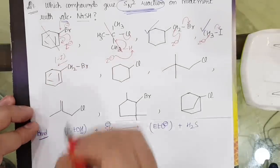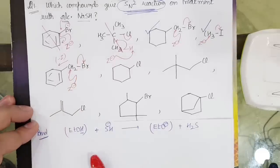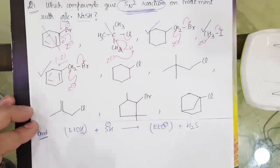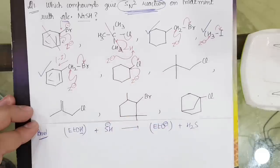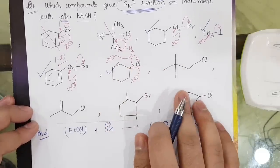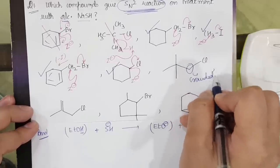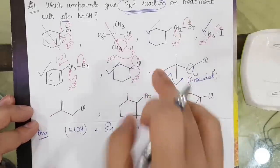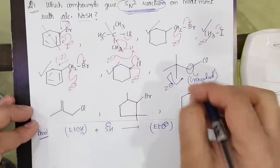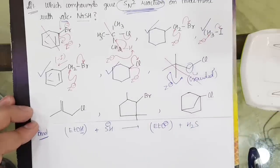For the next carbon, the minus I effect makes this carbon electron deficient, so the nucleophile can very easily attack and take this out, giving SN2. For the next compound, Z minus takes out Cl from there — SN2. However, in the crowded primary carbon case, three methyl groups are present guarding this carbon, so the nucleophile cannot attack easily — SN2 will not occur here.